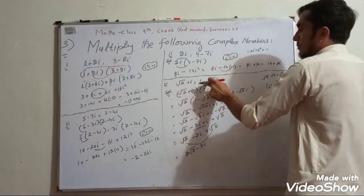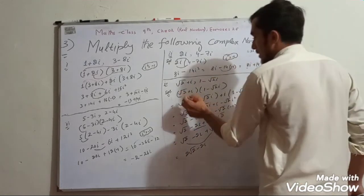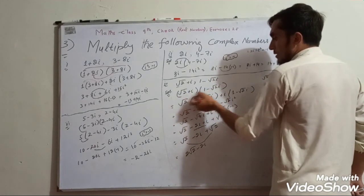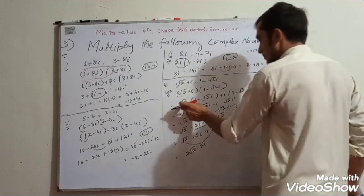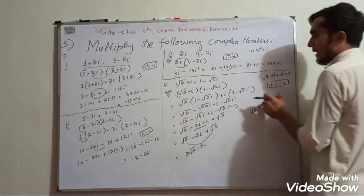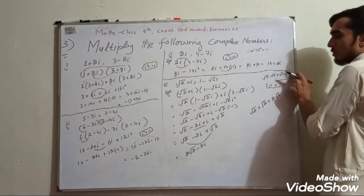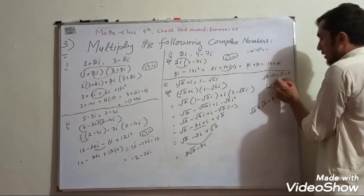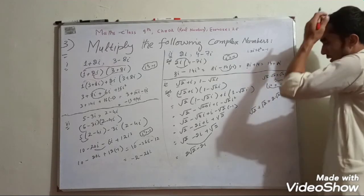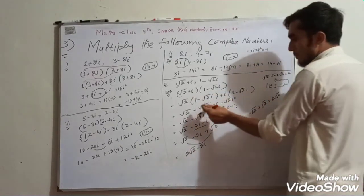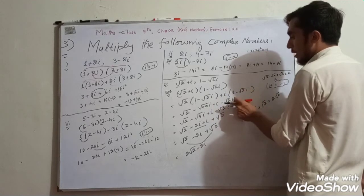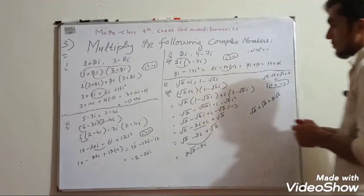Next question: root 2 plus iota multiplied by 1 minus root 2 iota. Multiply root 2 by 1 gives root 2. Root 2 multiplied by root 2 gives root 4 which equals 2. Then iota multiplied by 1 gives iota, and iota squared terms are applied.